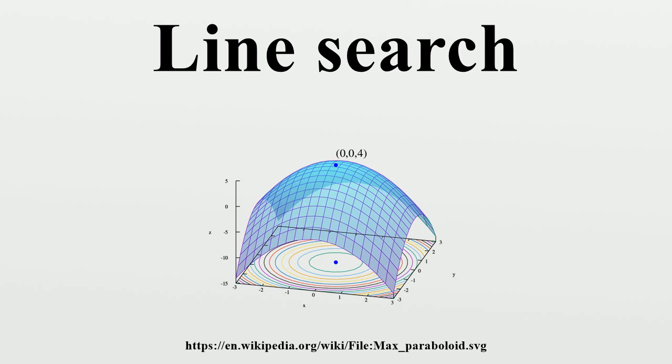Of the various methods of dividing the interval, golden section search is particularly simple and effective, as the interval proportions are preserved regardless of how the search proceeds.